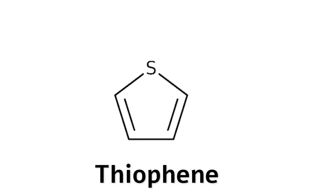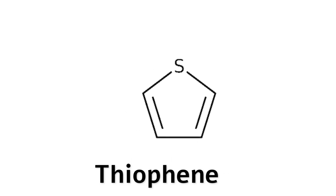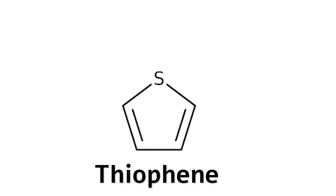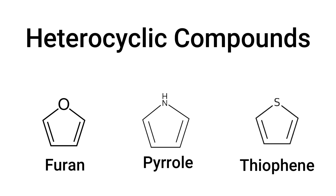It belongs to a family of heterocyclic compounds. In that family, along with thiophene, there is also a molecule called furan, which has an oxygen atom instead of a sulfur atom, and a molecule called pyrrole, which has a nitrogen atom in the five-membered ring structure. These are the most famous three of the heterocyclic compounds family.